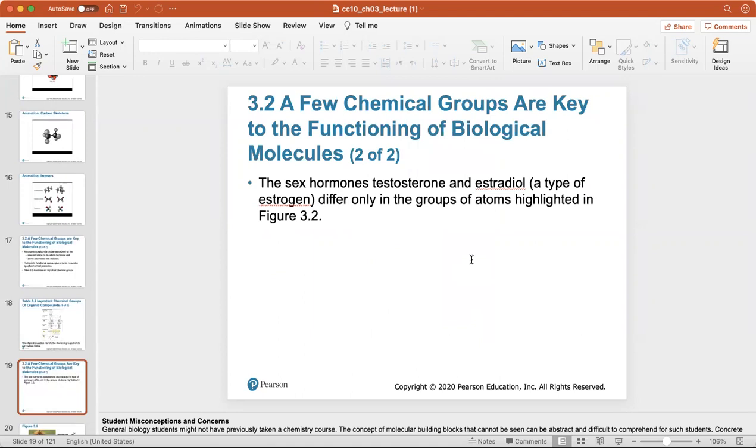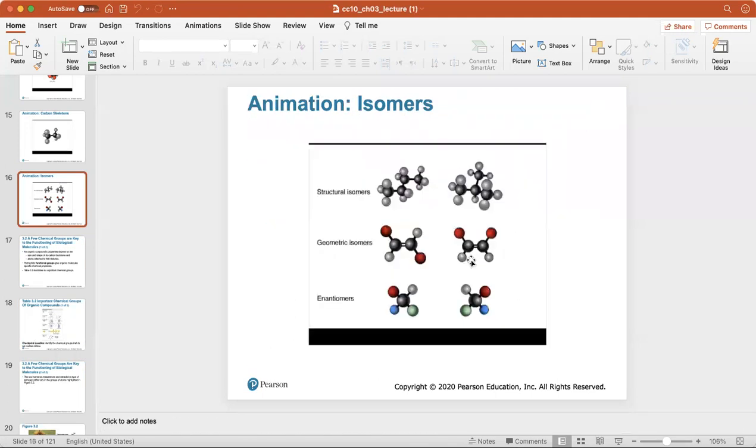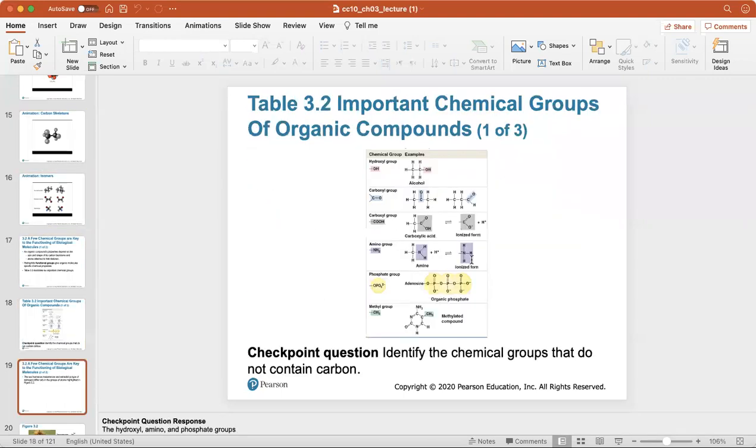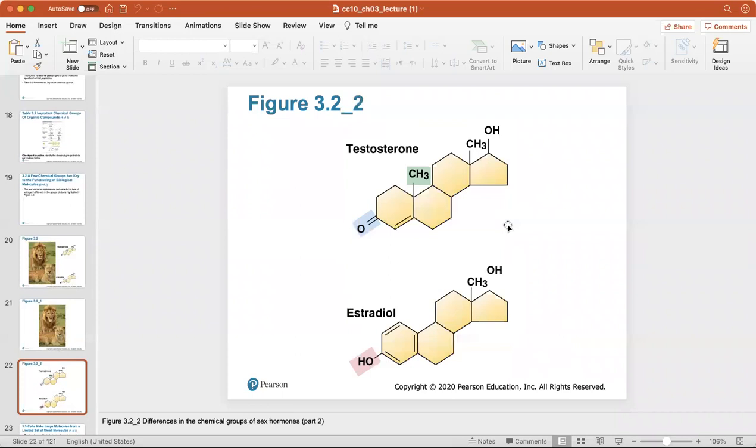A few chemical groups are key to the functioning of biological molecules, part two. For example, the sex hormones testosterone and estradiol, which is a type of estrogen, differ only in the groups of atoms that are highlighted in figure 3.2. You can see how the different atoms that are highlighted are differing just very slightly to give these hormones very different properties. Here's the differences in the chemical groups of the sex hormones.